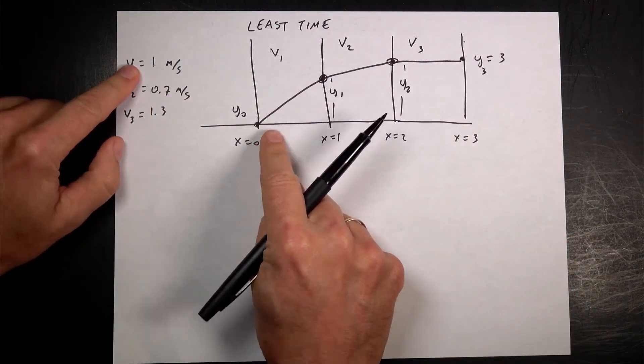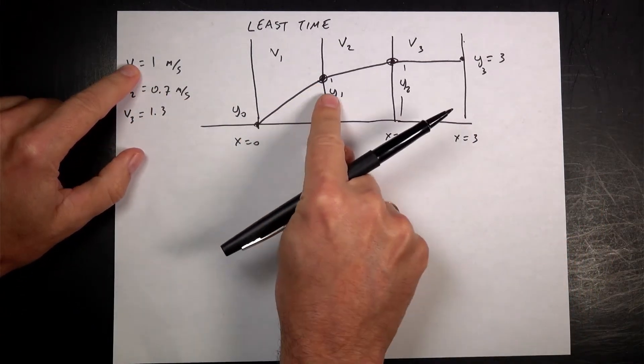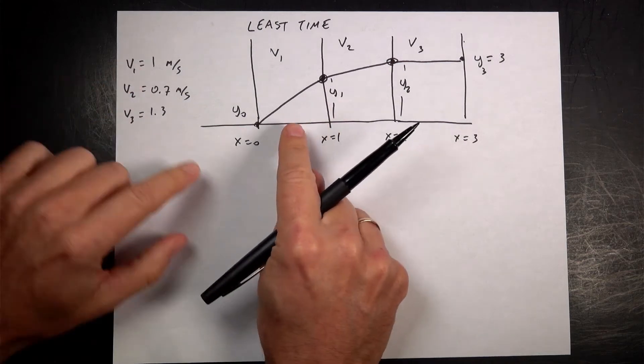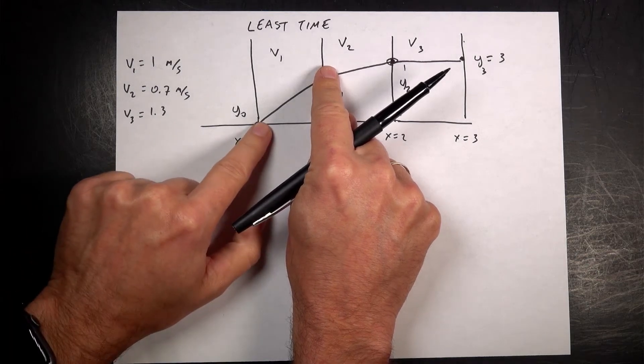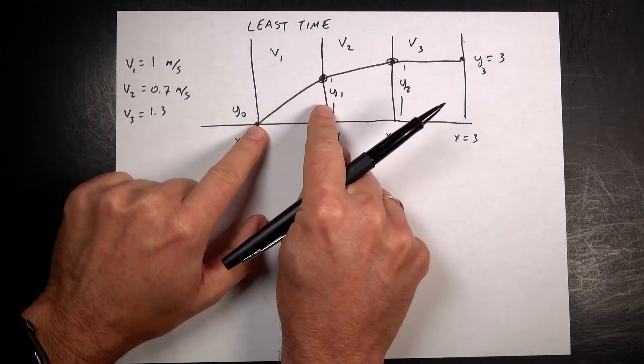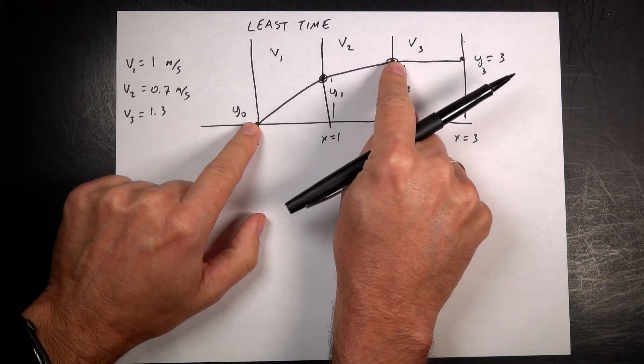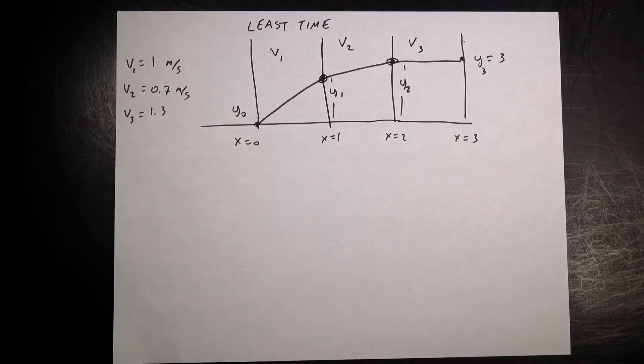Because if this has the highest speed, I want to use that to my advantage to go up as high as I can, right? Because I can go faster. If this was a slow speed, then I'd want to get across as fast as I can and then speed up more in the next one. And we can change up those values and everything.